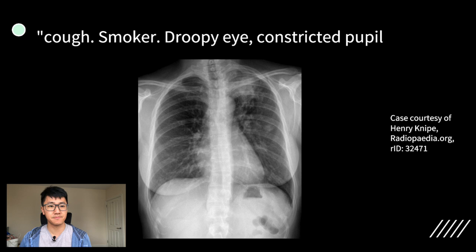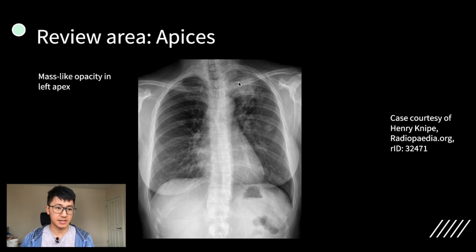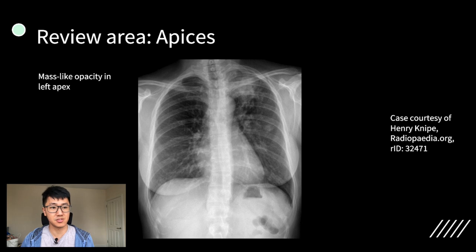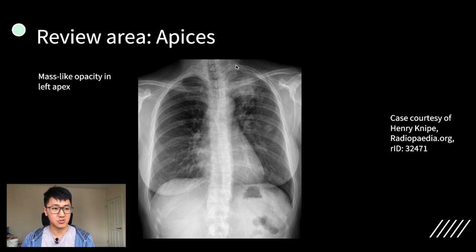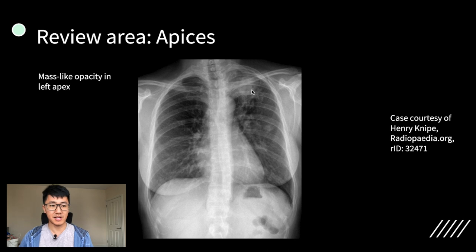Now try this one on for size. So here in the left apical region, you can see there is an ill-defined mass-like opacity. That combined with a history consistent with Horner syndrome, you think about something like a Pancoast tumour or a lung tumour in the apex. These things are really easily missed because there are so many structures in the lung apex, which is why you should deliberately look there. The other tip is to compare it to the other side and you can clearly see that it's more opacified.